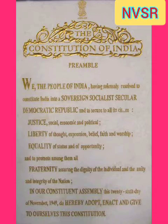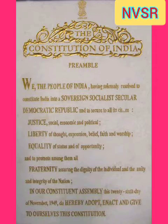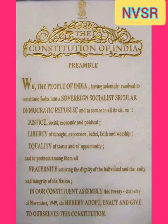Now let us see the text of the Preamble. The Preamble in its present form reads: We, the people of India, having solemnly resolved to constitute India into a Sovereign, Socialist, Secular, Democratic Republic and to secure to all its citizens justice — social, economic and political; liberty of thought, expression, belief, faith and worship; equality of status and of opportunity; and to promote among them all fraternity, assuring the dignity of the individual and unity and integrity of the nation. In our Constituent Assembly, this 26th day of November 1949, do hereby adopt, enact and give to ourselves this Constitution.